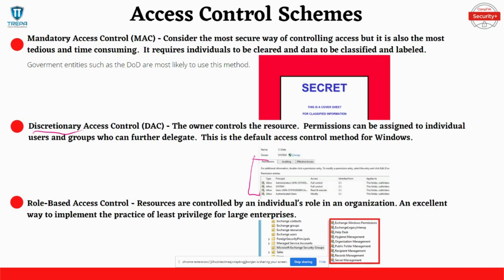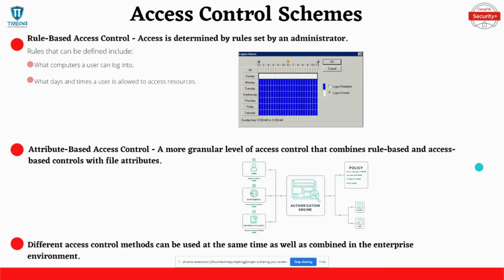Think of role-based access control as a way to give people exactly what they need. Rules-based access control has rules set by the administrator — for example, configuring when a user can log in or which specific systems they can access. Attribute-based access control is a more granular level that combines rule-based and role-based controls with file attributes to determine access, using specific attributes like policies, location, or environment.